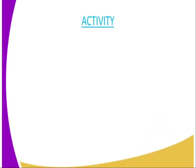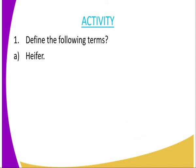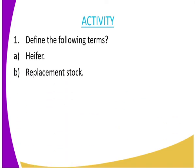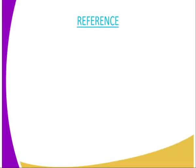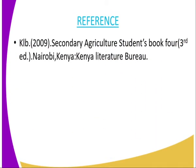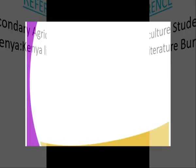We have come to the end of today's lesson and I am going to give you an assignment. Question one: define the following terms — A, heifer, and B, replacement stock. Question two: explain any five routine management practices done when raising a replacement stock. For reference, you can refer to the Secondary Agriculture Student Book 4, published by the Kenya Literature Bureau.